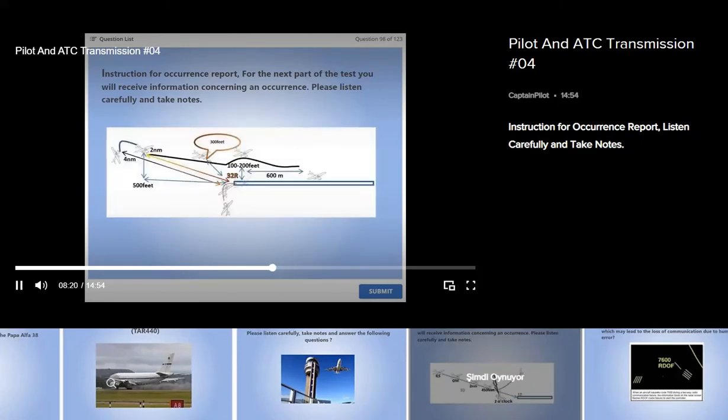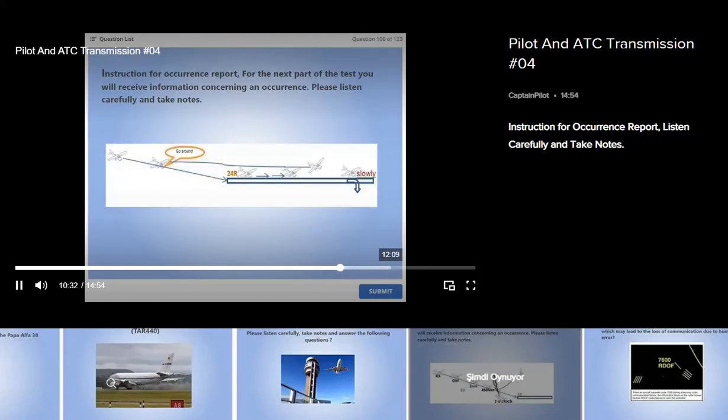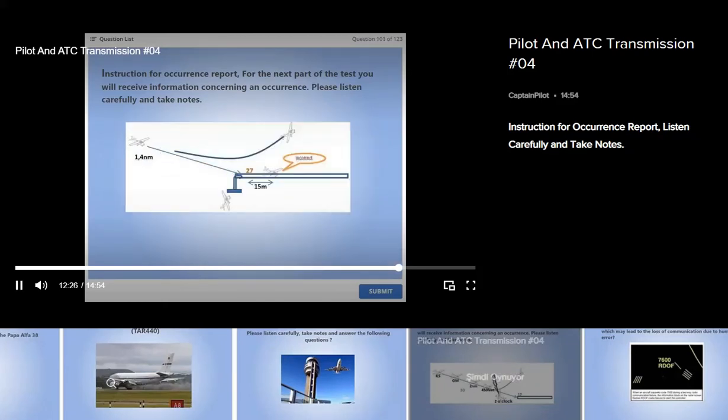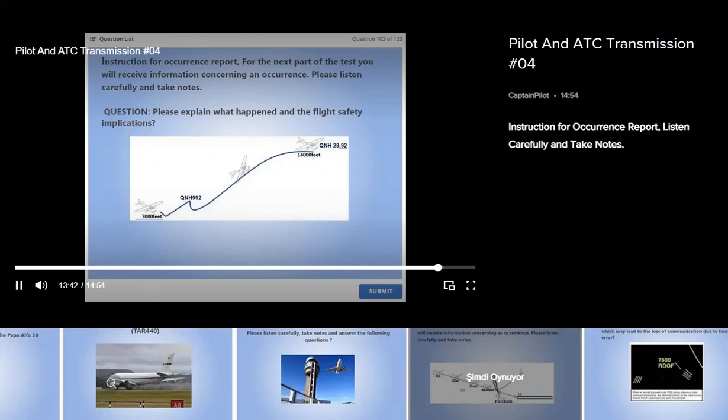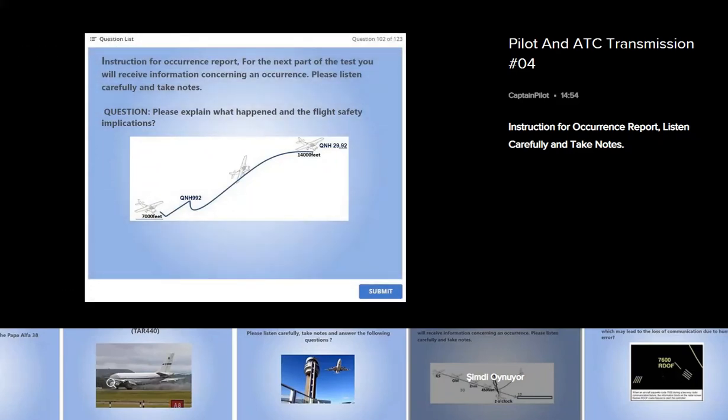Received your take-off clearance. ATC told you to stop. You acknowledge the instruction. ATC to confirm QNH 992 hectopascals, or did they mean 29.92 inches? ATC replied climb 14,000 feet on 29.92 inches.